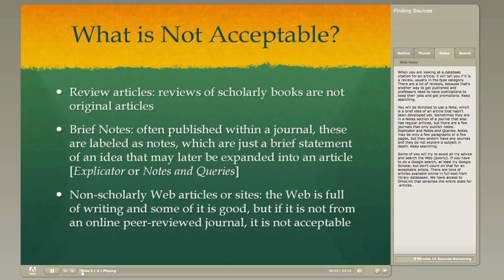When you're looking at a database citation for an article, it will tell you if it is a review article, usually in the type category. There are a lot of reviews out there and they will come up in your searches because reviews are another way to get published and professors need publications to keep their jobs. There's nothing wrong with them — they're just not appropriate for this assignment. So if you run across a review, keep searching.